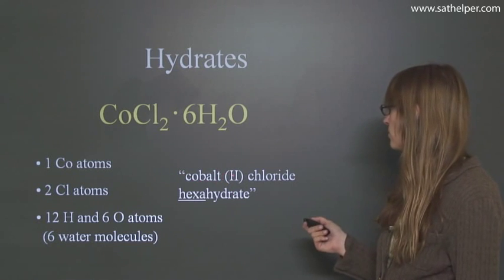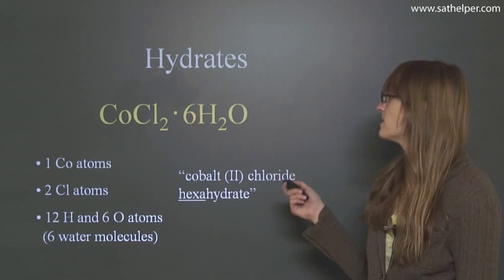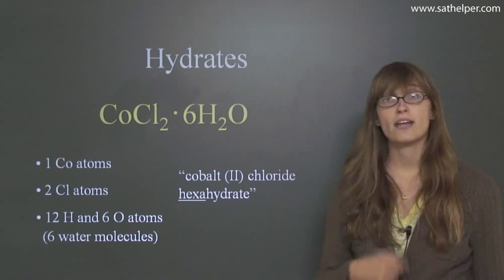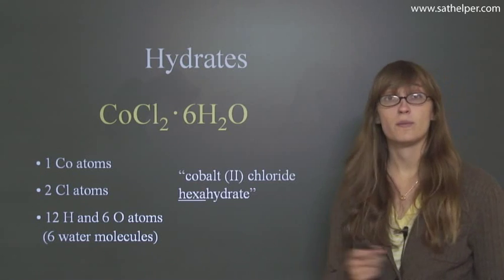So this is cobalt 2 chloride hexahydrate. So why is it hexahydrate? That's because we have this 6 here. So if we had a 2 there or a 4 there or an 8 there, it wouldn't be hexahydrate. It would be something else.